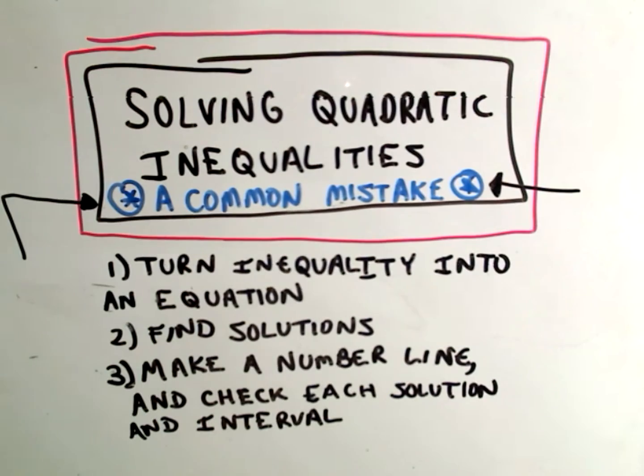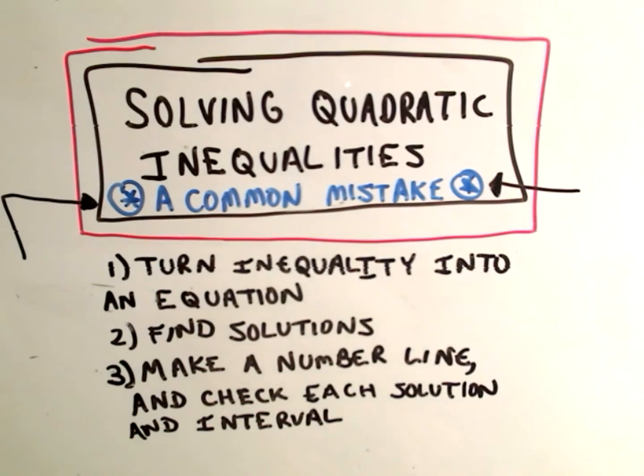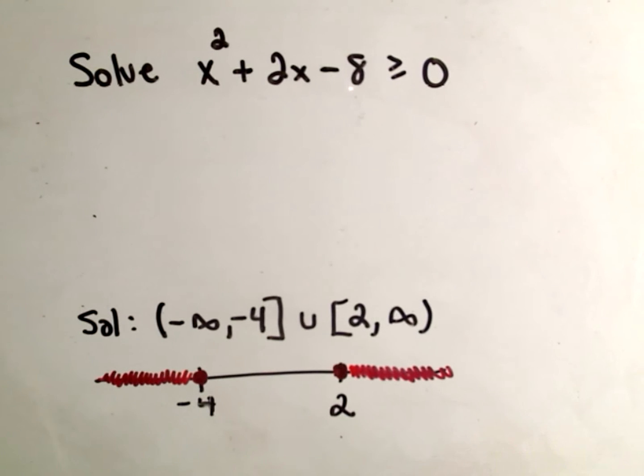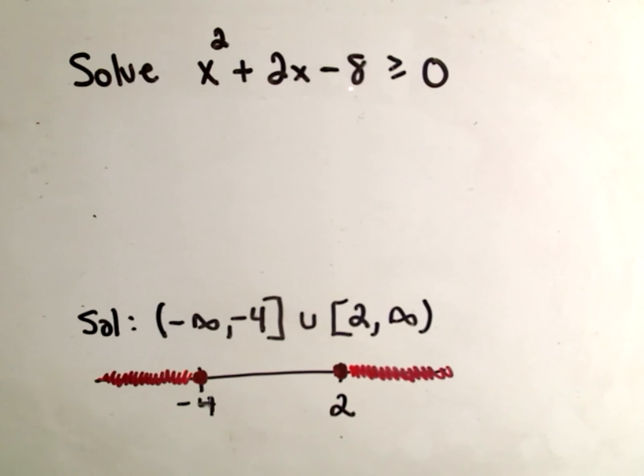So, don't do what I'm about to do. A second ago, or in my other video, we actually solved this quadratic equation, x squared plus 2x minus 8. And we came up with the solutions, negative infinity to negative 4, and then 2 to infinity.